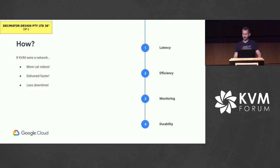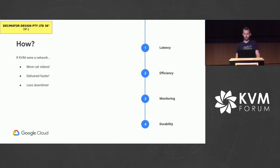To scale KVM development, maintenance, and validation, let's pretend for a minute that KVM is a network. If KVM were a network, users would be asking for more cat videos delivered faster and with less downtime. In KVM terms, that means we need to improve latency to get features merged faster, improve developer and maintainer efficiency so merging new features requires less time and effort, improve monitoring so that when there are bugs they're found in a more timely fashion, and improve KVM durability so that we aren't constantly in a state of fixing KVM.